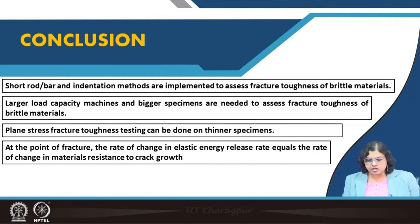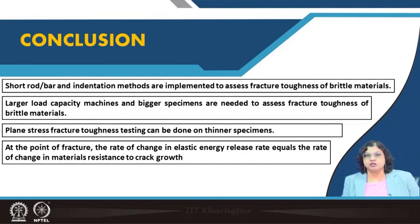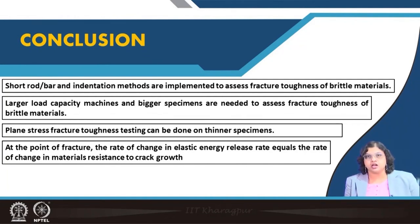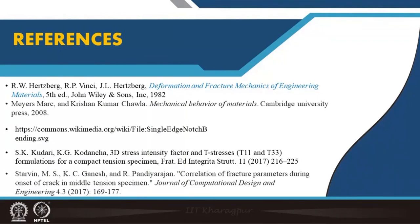To conclude: the short rod or bar and indentation methods are useful alternative ways to estimate fracture toughness, particularly for brittle materials, without requiring complicated specimen geometry or high load capacity machines. Standard plane strain K1C testing has disadvantages including the need for large specimens and high load machines. For thinner specimens or highly ductile materials, plane stress fracture toughness testing is preferred, determined by equating the rate of change of elastic energy release rate to the resistance to crack growth.